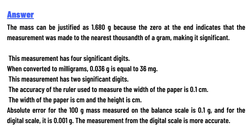The absolute error for the 100 g mass measured on a balance scale is 0.1 g, and for the digital scale it is 0.001 g. The measurement from the digital scale is more accurate.